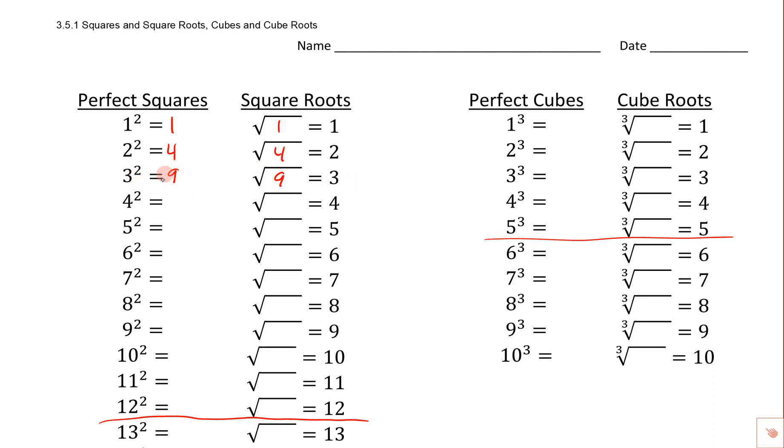So squaring changes the number, changes from 2 threes, or 1 three into 2, so that makes a 9, and then the square root takes those 2 threes that make up the 9 and turns them into 1 as far as the answer goes.